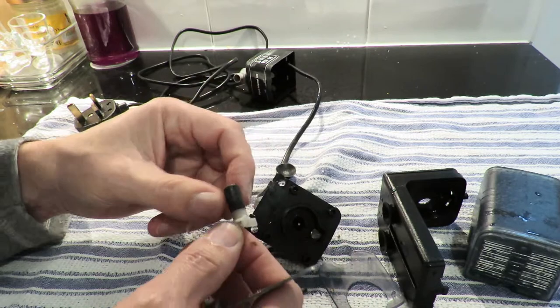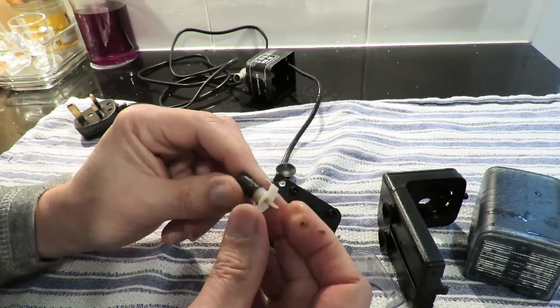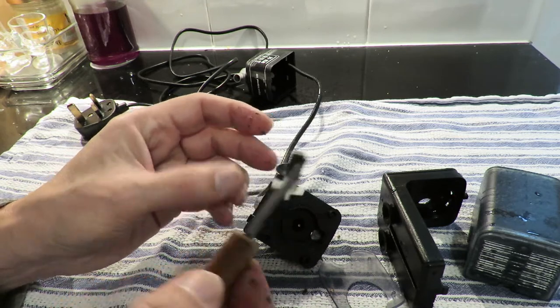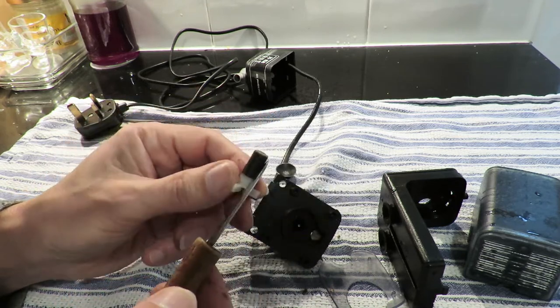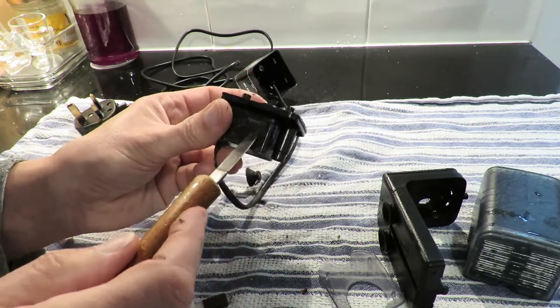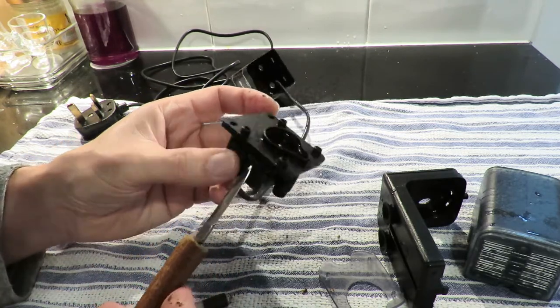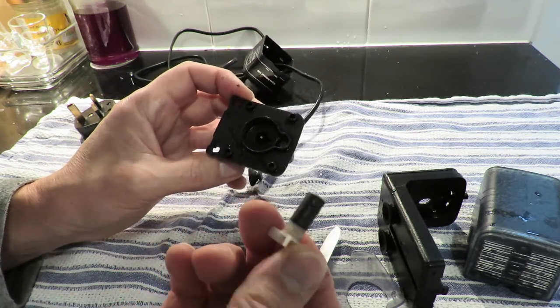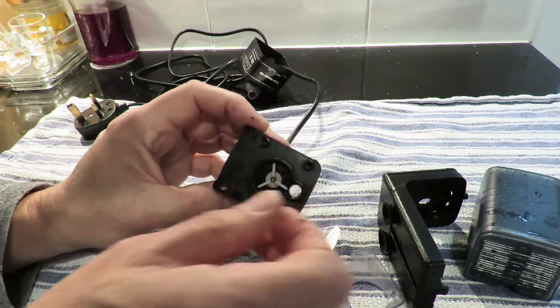Oh, even easier. Now I can see exactly what it is. If I'd done that first of all. Magnet. So that'll be a coil. No point in trying to take that apart. That's a coil. That spins that magnet.